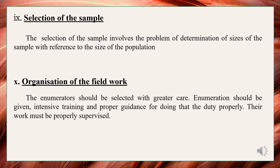Organization of the fieldwork: How to conduct the survey, how to handle business administrative issues, providing proper training to surveyors, procedures, plans for handling non-response and missing observations, are some of the issues which need to be addressed for organizing the survey work in the field. The procedures for early checking the quality of returns should be prescribed, and how to handle the situation when the respondent is not available should be clarified. Enumerators should be selected with great care, given intensive training and proper guidance, and their work must be properly supervised.